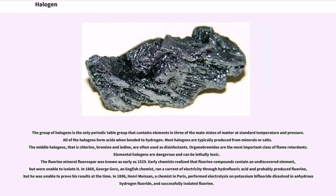The fluorine mineral fluorospar was known as early as 1529. Early chemists realized that fluorine compounds contain an undiscovered element, but were unable to isolate it. In 1860, George Gore, an English chemist, ran a current of electricity through hydrofluoric acid and probably produced fluorine, but he was unable to prove his results at the time. In 1886, Henri Moissan, a chemist in Paris, performed electrolysis on potassium bifluoride dissolved in anhydrous hydrogen fluoride, and successfully isolated fluorine.